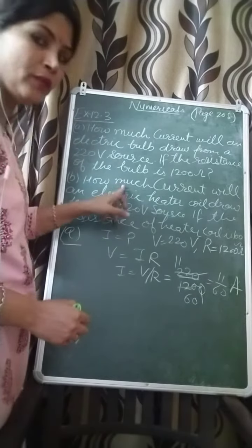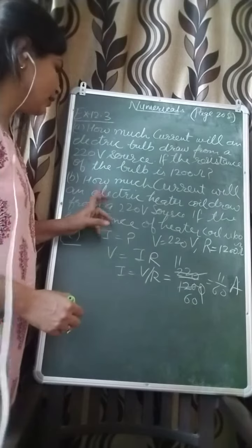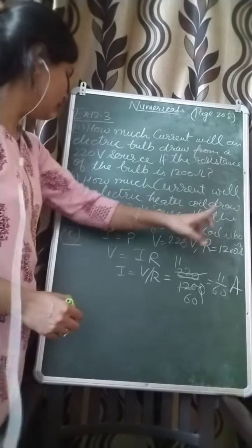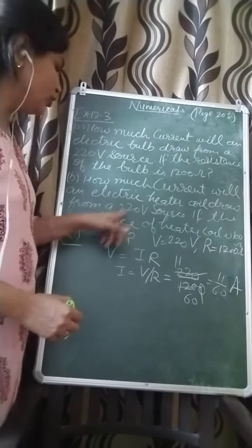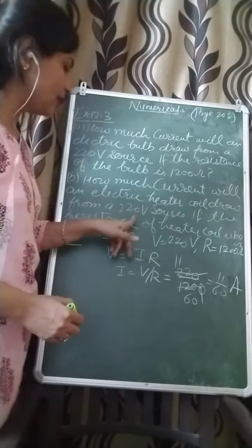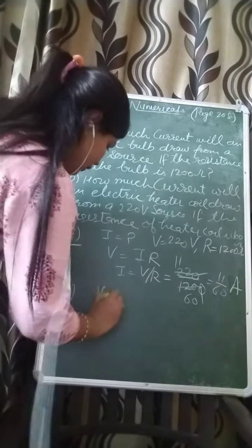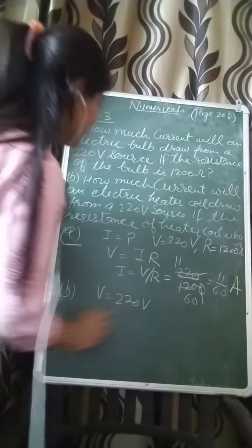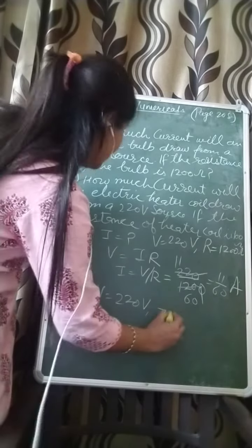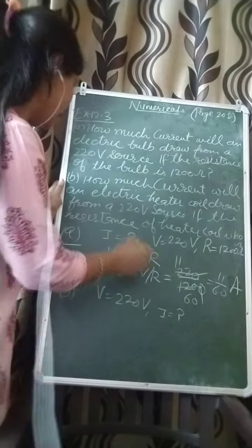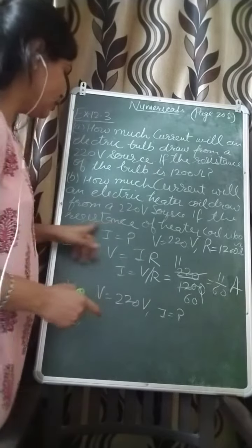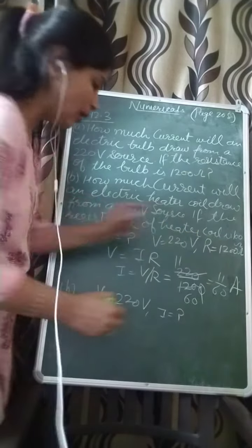Now part B: How much current flows in an electric heater coil when connected to a 220 volt source? That means V is given 220 volt. You have to find out in this case if the resistance of the heater coil is 100 ohm.